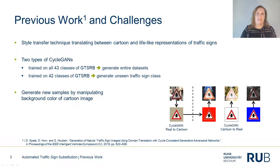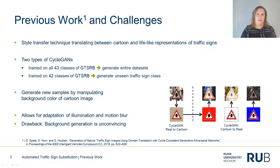With a given traffic sign sample, one can easily generate other images of the same class when manipulating the cartoon representation. As the CycleGAN has learned to encode background information as well as illumination and motion blur in the background color of the cartoon image, new snippets can be created by simply changing that unicolored background and transferring it back to the lifelike domain. As you can see in the figure, not only the background of the lifelike generated images changes, but also illumination and motion blur are adapted accordingly.